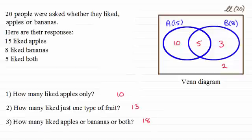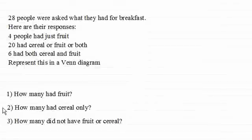Now, as I said earlier, I've got an example that I would encourage you to have a go at. Very similar to this, but just give you a little bit more further practice. And here it is. We've got 28 people who are asked what they had for breakfast. And here are their responses. Four people had just fruit. 20 had cereal or fruit or both. Six had both cereal and fruit. And we've got to represent this information then in a Venn diagram and go on to answer these questions here.